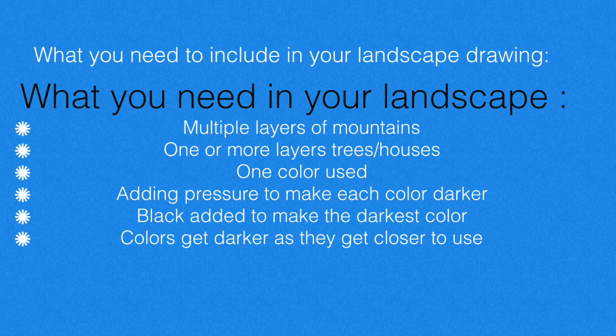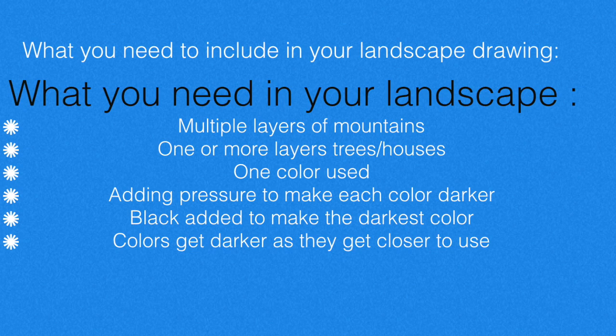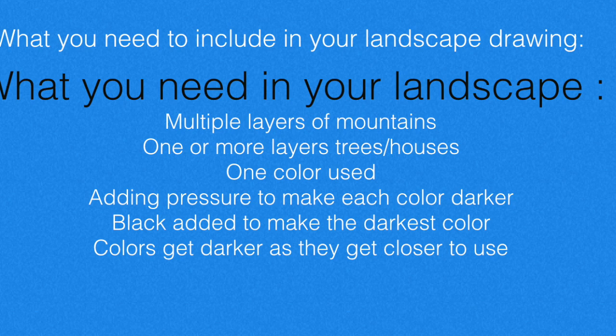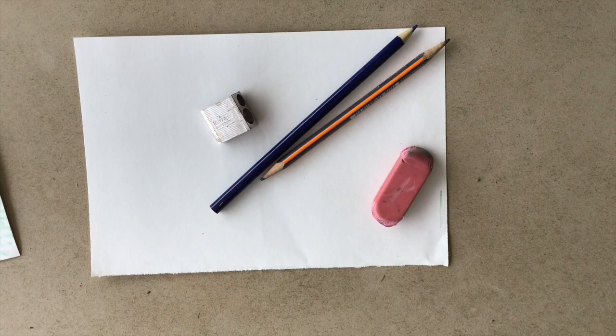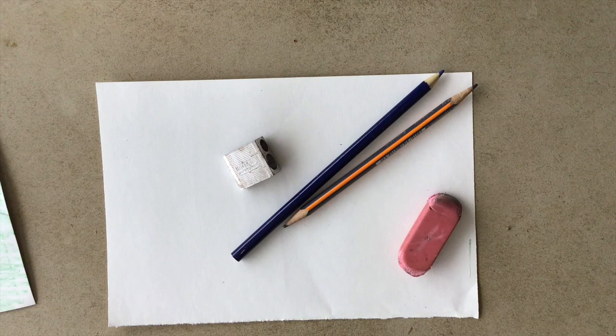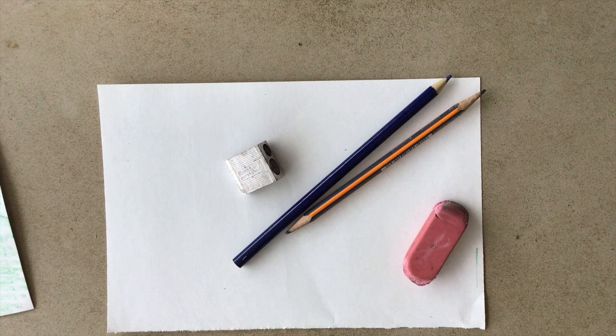What we're going to need for this landscape drawing is multiple layers of mountains, one or more layers of a tree or house in the foreground. You may only use one color. Add pressure to get darker in your foreground — that's your darkest place because it's closest to you. Add a layer of black underneath and it'll help make it darker as it comes closer. For supplies, you'll need a half sheet of paper, a drawing pencil, an eraser, a pencil sharpener, and one colored pencil. You can choose any color you want. I would suggest a darker hue — yellows are a little hard to do on this, so I chose a blue.